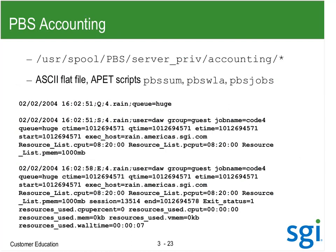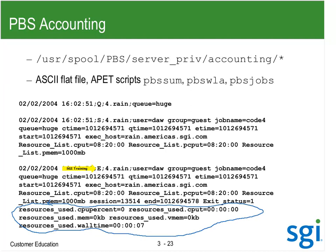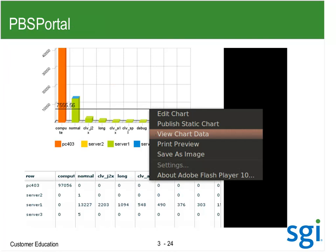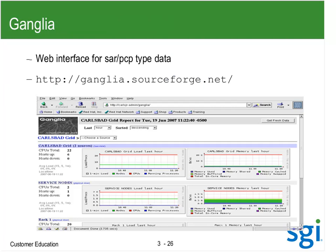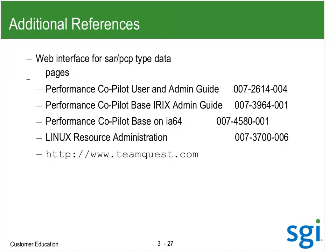PBS accounting: you'll be in Torque instead of PBS, using the server_priv accounting directory. I've got some scripts passed to the University of Alberta. For a given job, we get the job queued — here's job ID 4 — then started with what it requested, then it exited. We get what it actually used. I have a PBS WLA command to convert that into an ASCII report. PBS also has PBS Portal to plot this data, but I won't cover that here. I want to get into Ganglia tomorrow and install it on my UV.